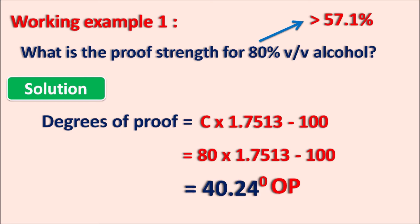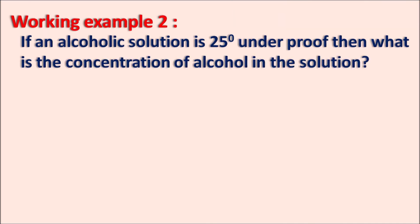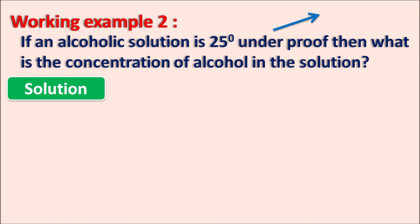Now let us see another example where we calculate the concentration of an alcoholic solution if we know the proof strength. Working example 2: If an alcoholic solution is 25% underproof, what is the concentration of the alcohol? This is the reverse — we calculate concentration from proof strength. Underproof gives a negative value, so even though it is given as 25 underproof, we must take it as minus 25.